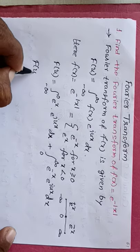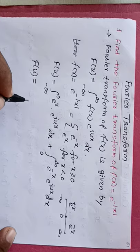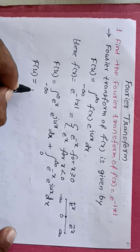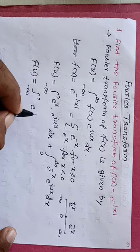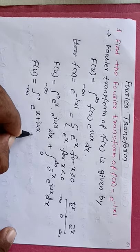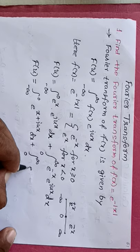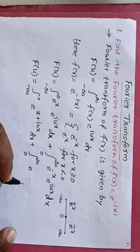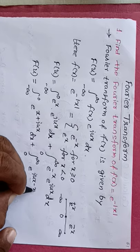F(u) equals integration from minus infinity to 0 of e raised to (x + iux) dx, plus integration from 0 to infinity of e raised to (iux minus x) dx.